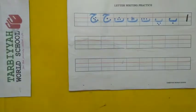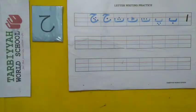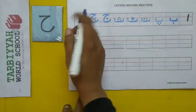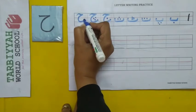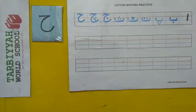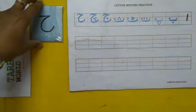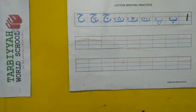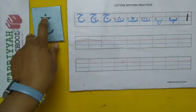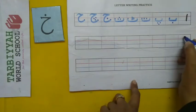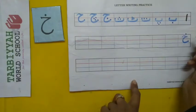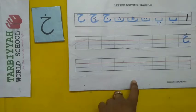And the next letter — Jeem, Che, He. Same shape, this one is empty — no dots. He. And the next letter after He is Khhe. Khhe has one dot on top. So how do we write Khhe? See, same shape, one dot on top. Khhe.